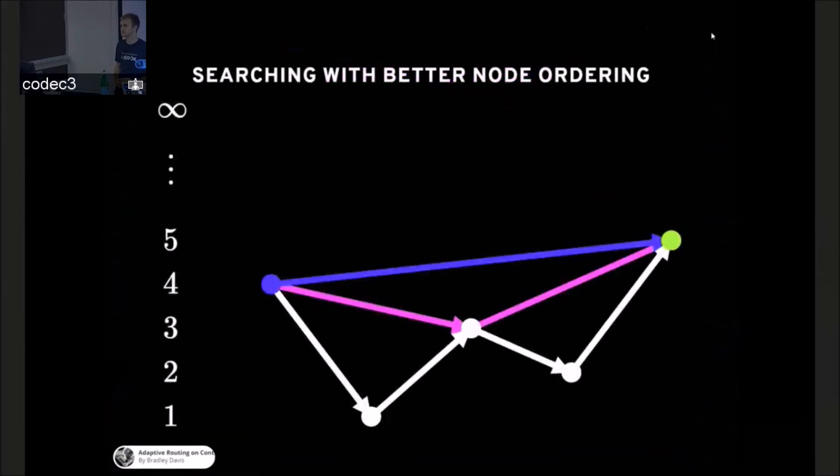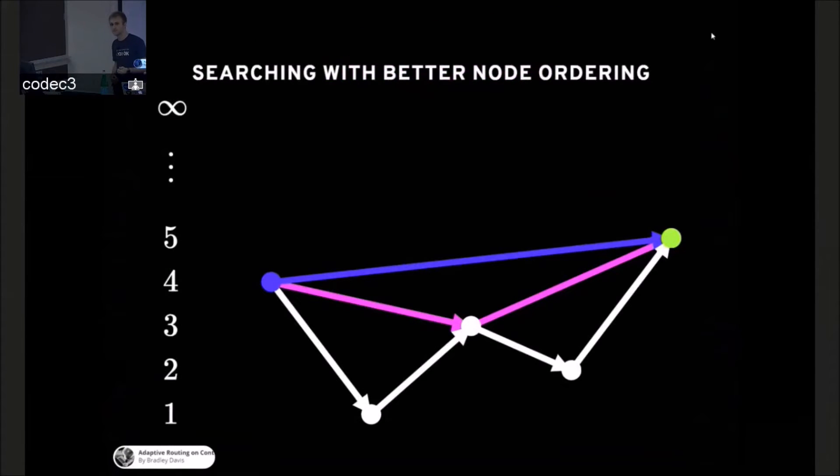So now if we search from blue to green, we only have to go one hop. That's it. And we have the path. And to spit out the path, we have to recursively unpack the original path. So the blue line has a pointer to the middle node. So you substitute the blue line for the two shortcuts, and for each shortcut, you substitute the two original edges, and you have the original path.